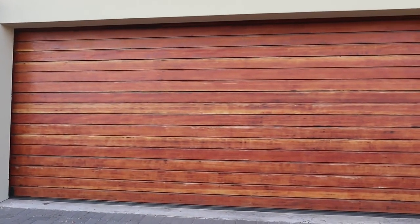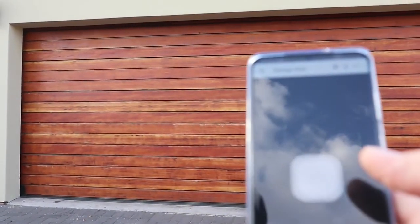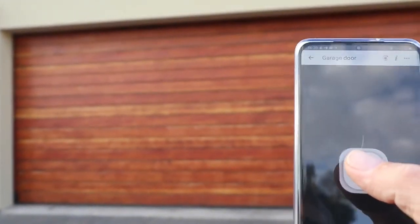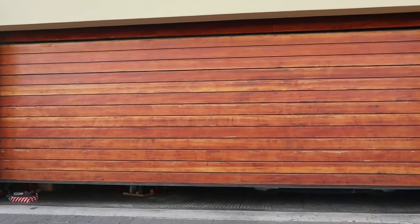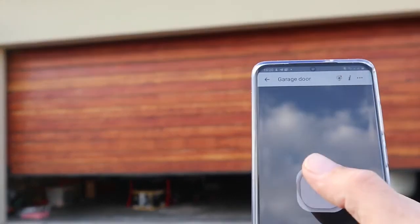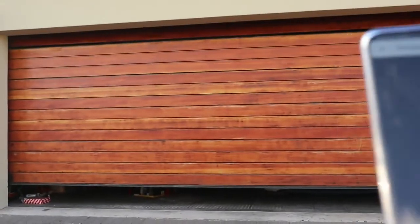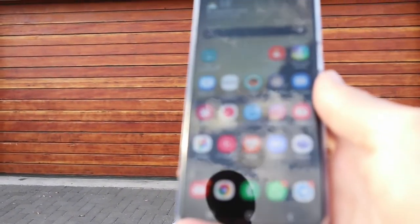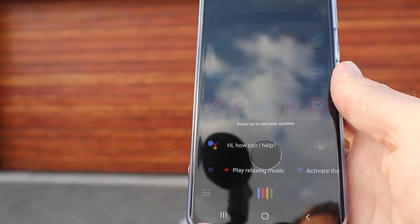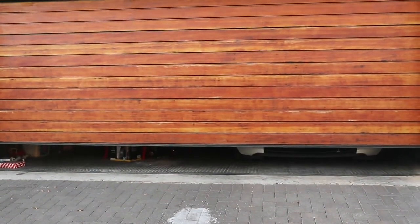All righty, here we are - the final proof of the pudding. There's the app, there's the garage door. Click - click stop - click close. And for our final party trick: Hey Google, activate the garage door. Okay, turning on the garage door.